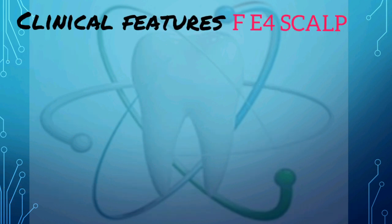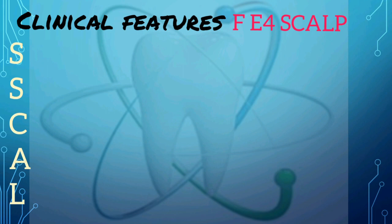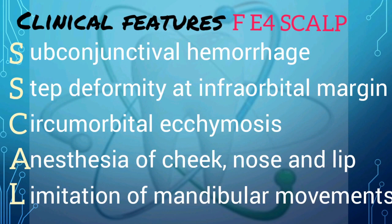Next, the signs and symptoms of zygomatic complex fracture. A simple mnemonic here is PHESCALP. The F stands for flattening of the injured cheek. The four E's stand for: epistaxis which is unilateral, ecchymosis and tenderness in the upper buccal sulcus, enophthalmos, and edema of the cheek and eyelids. The S stands for subconjunctival hemorrhage observed at the outer canthus. The other S stands for step deformity of the infraorbital margin.